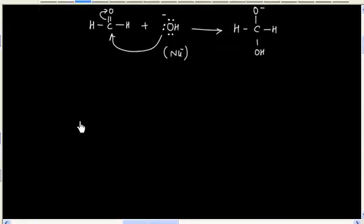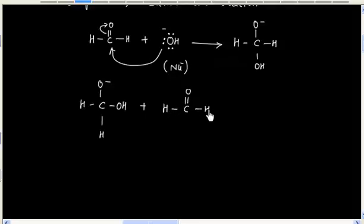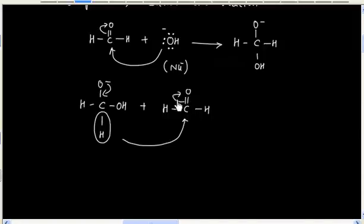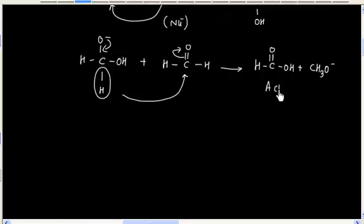In the next step, we will have hydride transfer. Hydrogen with its bond pair of electrons gets transferred to another formaldehyde molecule, so we will have an acid and an alkoxide ion as the products.